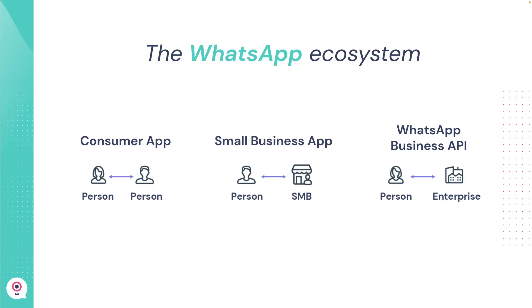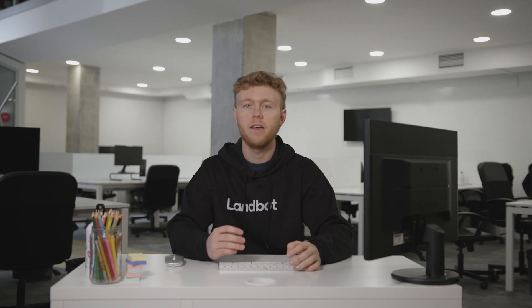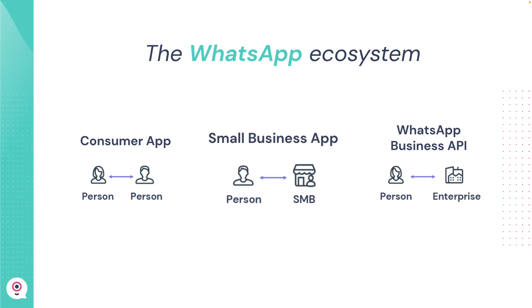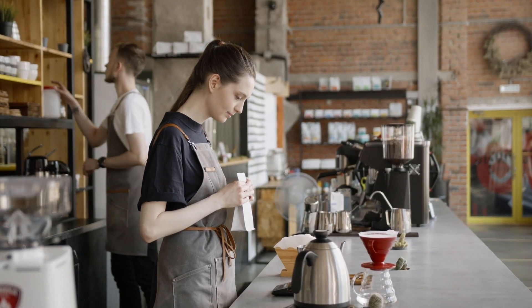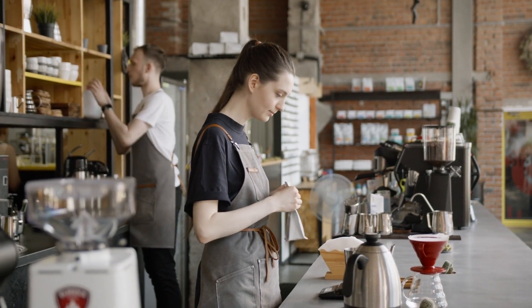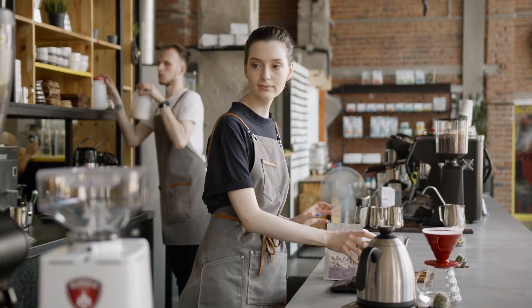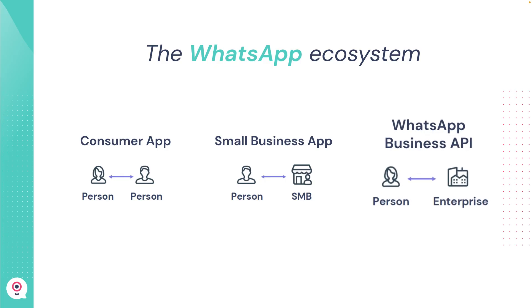The WhatsApp ecosystem is formed by three different WhatsApp services. First, we have the consumer app — the one you and I have on our phones to talk with our friends and family. Then we have the small business app, used by small to medium businesses to connect with their group of customers. And finally, the WhatsApp Business API, used by enterprise companies to communicate at scale with a larger customer base.